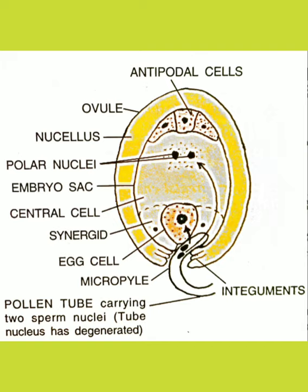The embryo sac contains seven cells, that is 3 plus 3 plus 1. Three cells are at the micropylar end: one egg cell and two synergids, as you can see in the figure. Three cells at the opposite end are called antipodal cells. And one large central cell. The central cell is different, containing two nuclei called polar nuclei.